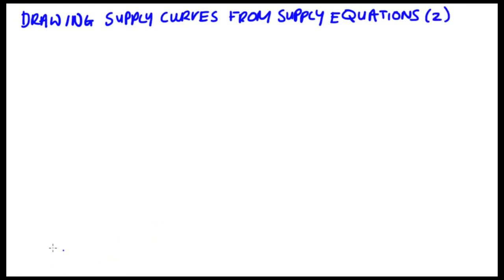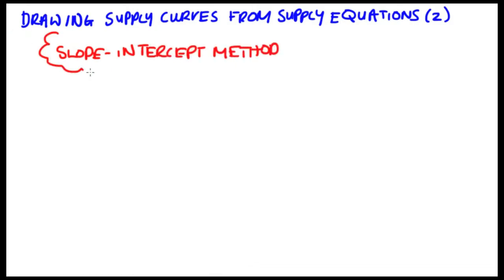In the last video I drew the supply curve from this supply equation by finding the price axis intercept and the quantity axis intercept. In this video we're going to do something a little bit different, which is by finding the slope of the line and also the intercept from the supply equation itself. So let's just jump straight into an example and I can explain things as we go through.